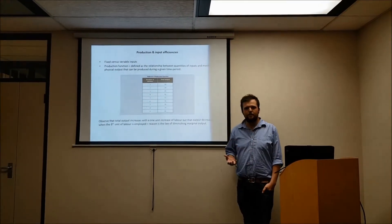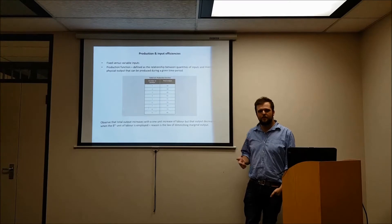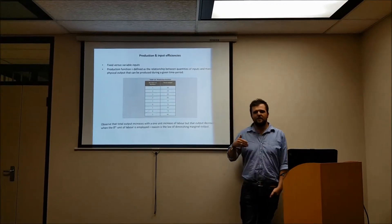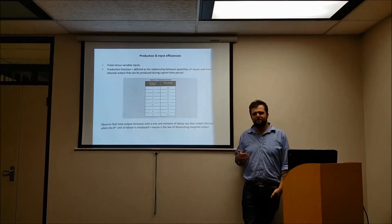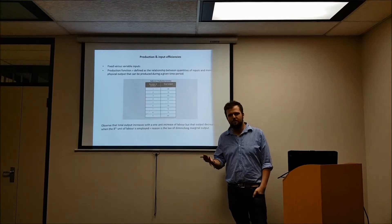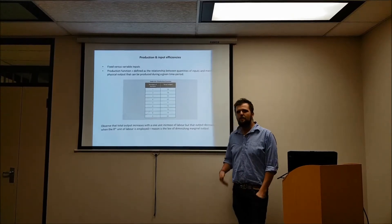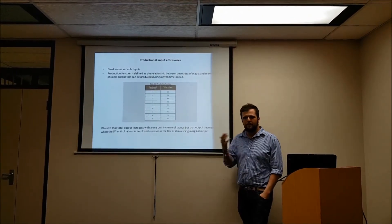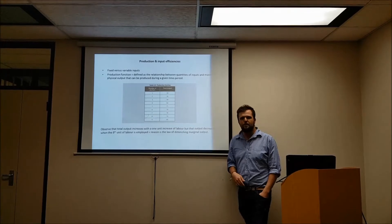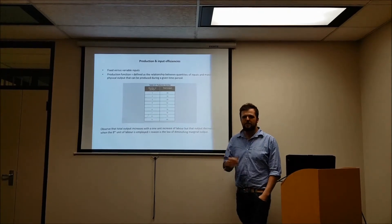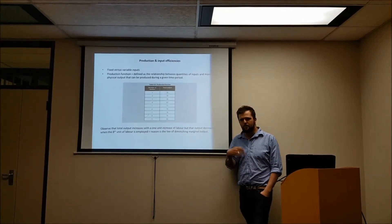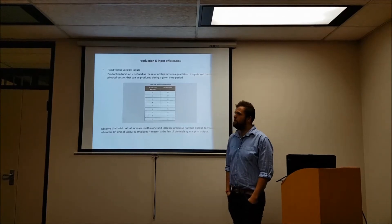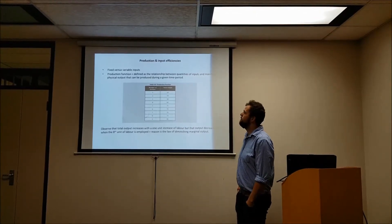You need to know the definition of an input. An input is used by a business if they want to produce something. So labour is an input, a plant is an input, a factory is an input, a building is an input. All of these are inputs used in the production process. Normally we get two types of inputs: fixed and variable.